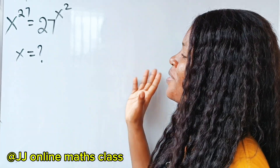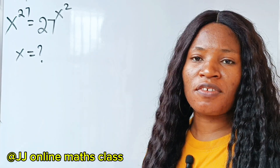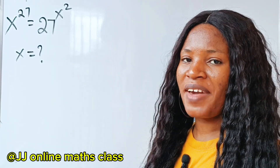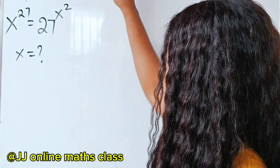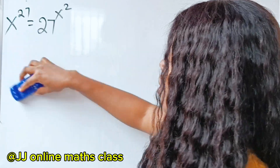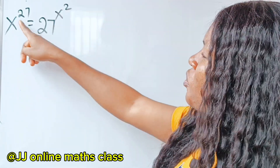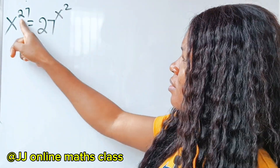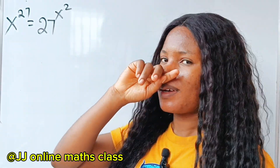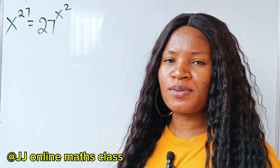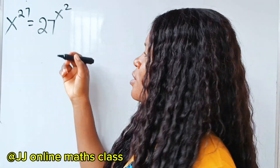Hi, let's quickly solve for the value of x. The first thing we need to do is I want to remove this 27, and I want to remove this x to the power of 2.